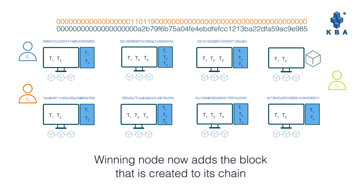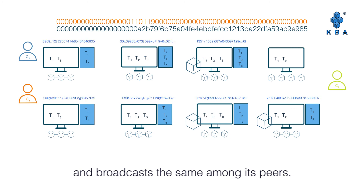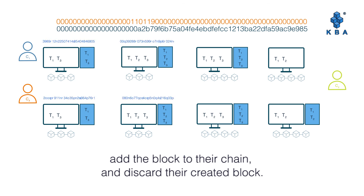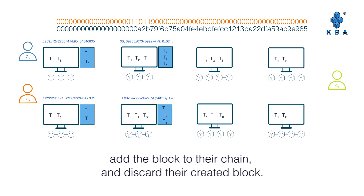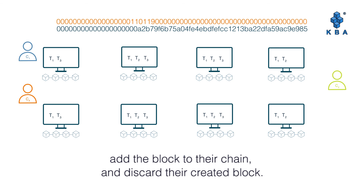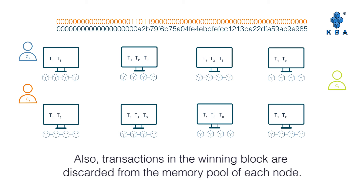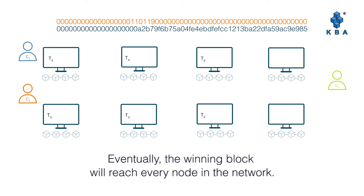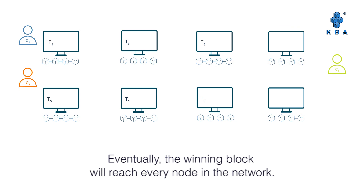The winning node adds the block it created to its chain and broadcasts it among its peers. Peers verify the new block, add the block to their chain, and discard their own created block. Transactions in the winning block are discarded from the memory pool of each node. Meanwhile, nodes ignore duplicate blocks that come by. Eventually, the winning block reaches every node in the network.